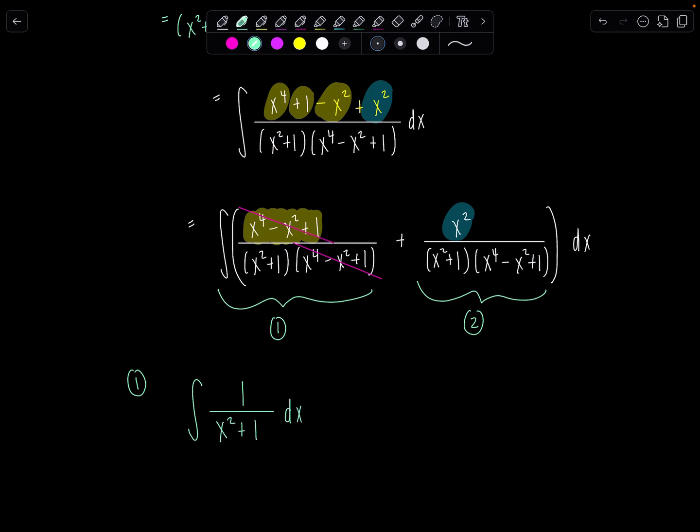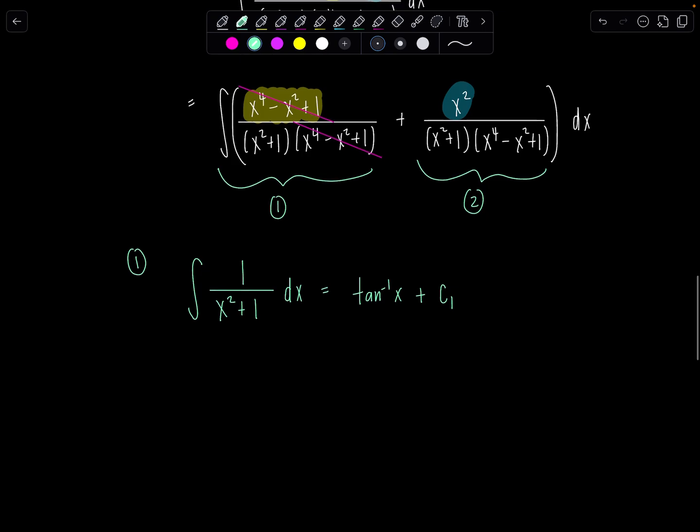Woo, fabulous. So antiderivative is arc tan of x or tan inverse of x. I'm going to put plus c one since we have another integral to evaluate. And I just want to end with nice and clean plus c at the end. So don't waste it now.